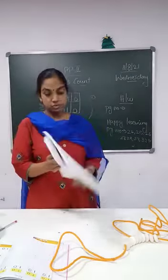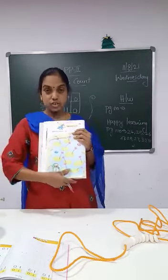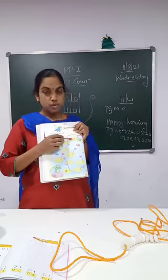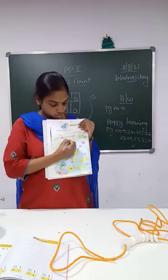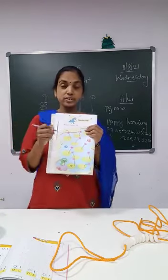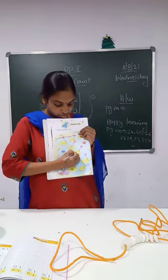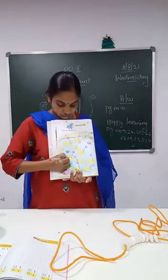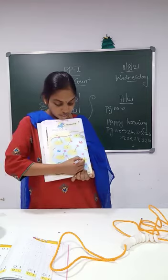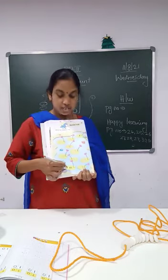Now turn to next page. We are going to write the numbers from 1 to 10. We have learnt the numbers from 1 to 10. Now let us start. This is 1. After 1 — 2. After 2 — 3. As I am writing, you will also write in your book. After 3 — 4. After 4 — 5. After 5 — 6. After 6 — 7. After 7 — 8. After 8 — 9. After 9 is 10.